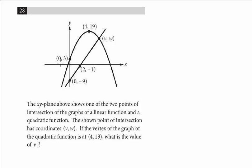So we have a line, we have a quadratic. We're told that they intersect at v, w, and we have to solve for v. We're also given the vertex of the quadratic and we're given two points on the line. We need the equations of both functions. Let's start with the line.